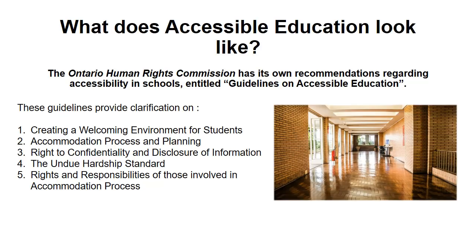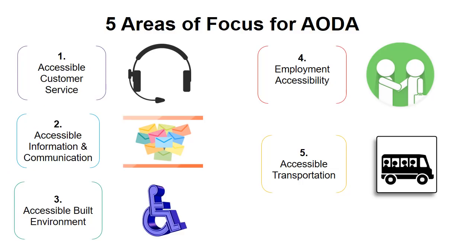What does accessible education look like? The Ontario Human Rights Commission has its own recommendations regarding accessibility in schools entitled Guidelines on Accessible Education. These guidelines provide clarification on creating a welcoming environment for students, the accommodation process and planning, the right to confidentiality and disclosure of information, the undue hardship standard, and rights and responsibilities of those involved in the accommodation process.